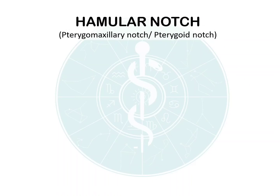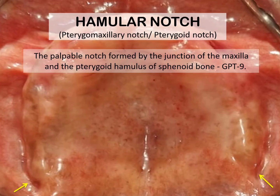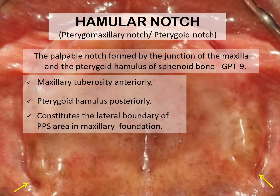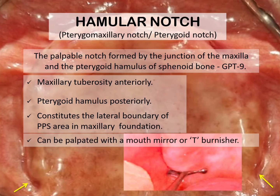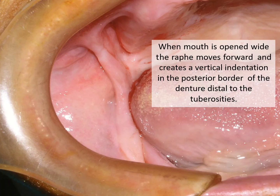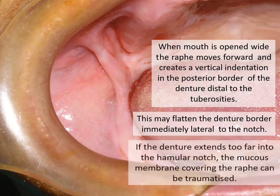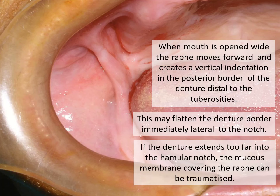The hamular notch is also termed the pterygo-maxillary notch or the pterygoid notch. GPT-9 describes it as a palpable notch formed by the junction of the maxilla and the pterygoid hamulus of the sphenoid bone. It is bounded by the maxillary tuberosity anteriorly and the pterygoid hamulus posteriorly. It constitutes the lateral boundary of the PPS area in the maxillary foundation and is palpated with a mouth mirror or T-burnisher. The pterygomandibular raphae is attached to the hamular notch, covered by mucosa, and extends from the hamulus inferiorly to the retromolar pad of the mandible. When the mouth is opened wide, the raphae moves forwards creating a vertical indentation in the posterior border of the denture distal to the tuberosities. If the denture extends too far into the hamular notch, the mucous membrane covering the raphae can be traumatized.